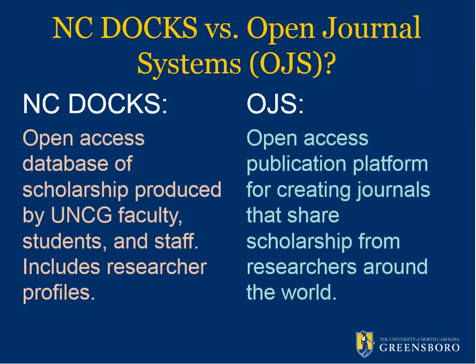So what's the difference between NC Docs, which Tiffany talked about, and Open Journal Systems, or OJS? Both of these are open access databases that provide scholarship. But NC Docs is really focused on scholarship produced by UNCG faculty, students, and staff, and it includes profiles for our researchers. Whereas Open Journal Systems is also sharing open access scholarship, our journals all have at least one person from UNCG who is involved — generally as a journal manager or editor — but the scholarship that they're publishing isn't necessarily from UNCG. That scholarship may be from researchers around the country or around the world.